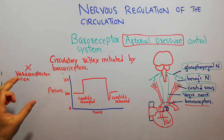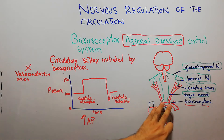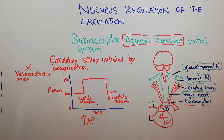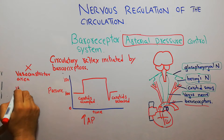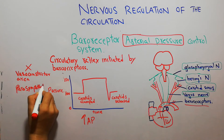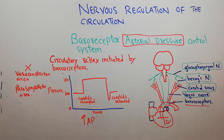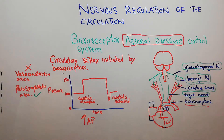The vasoconstrictor area in the vasomotor center gets inhibited when there is an increase in arterial pressure. This increase in pressure is detected by the baroreceptors and they send a signal to the brain. In the tractus solitarius area, when this signal is detected, the reflex initiated includes the inhibition of the vasoconstrictor area and activation of the vasodilator or the parasympathetic area.